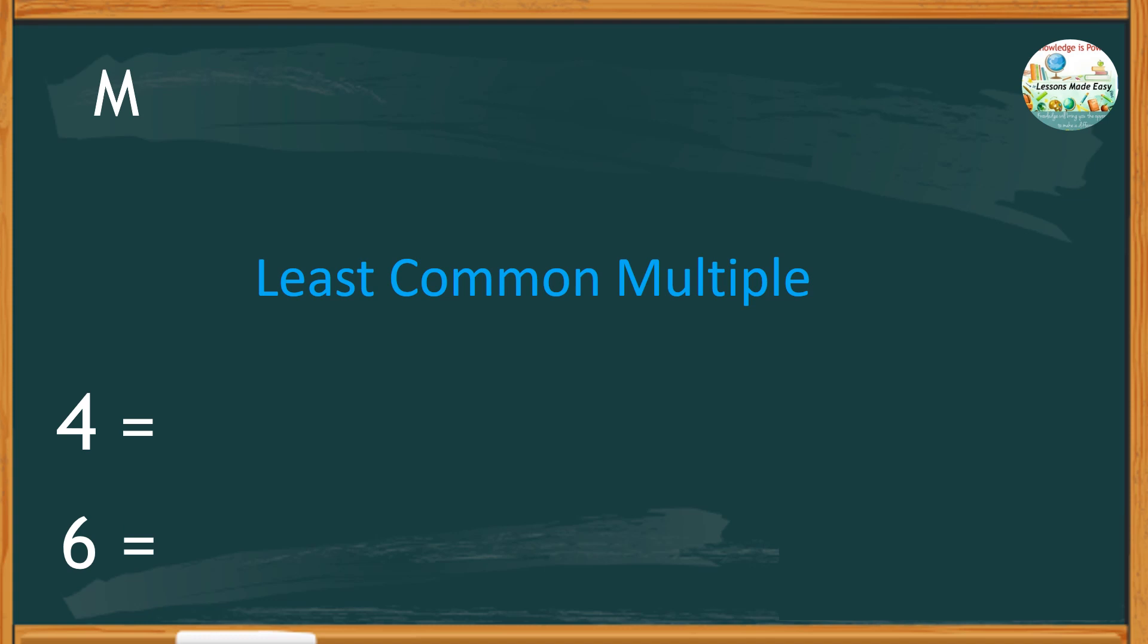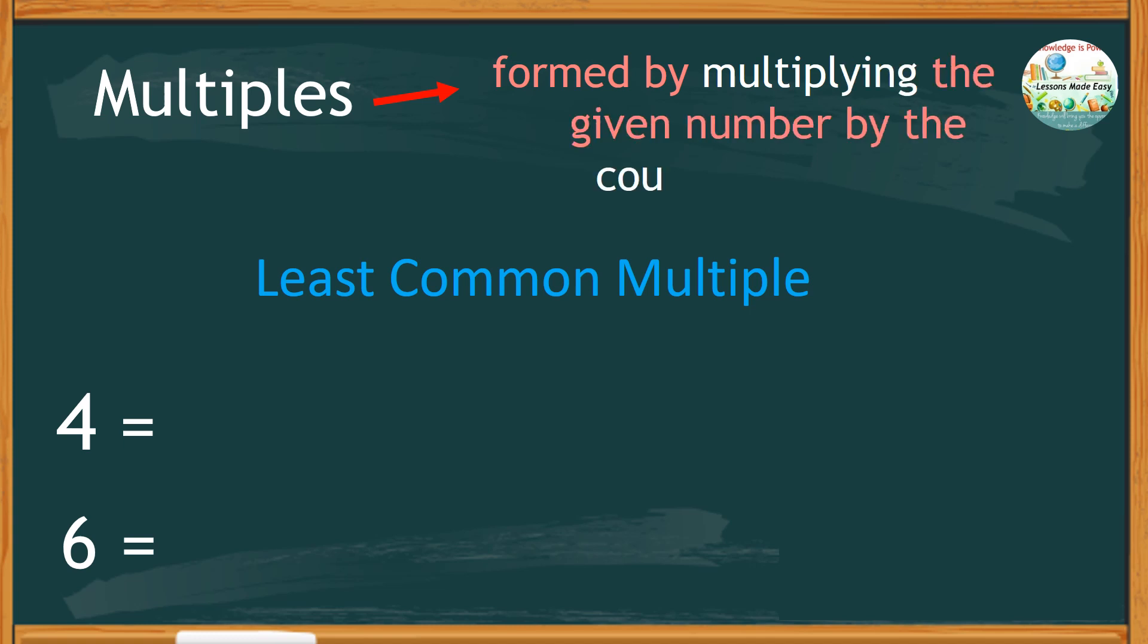We have to find the multiples of each number one at a time. Multiples are formed by multiplying the given number by the counting numbers. Counting numbers are the usual numbers we use when we count, like 1, 2, 3, 4, 5, 6, 7, 8, 9, 10, and so on.